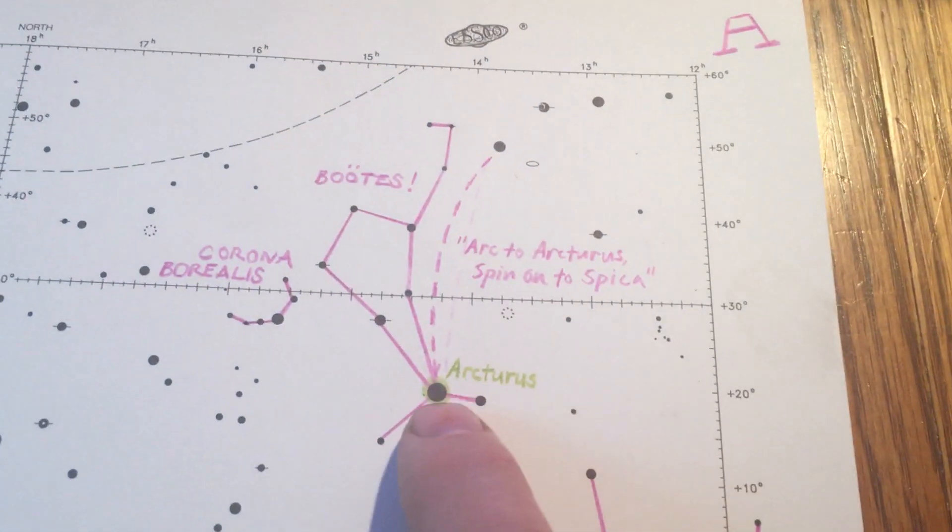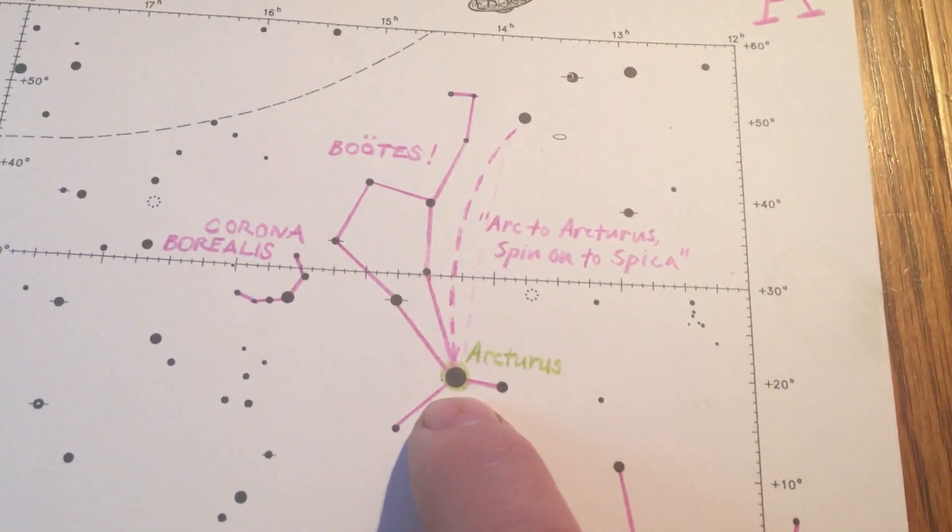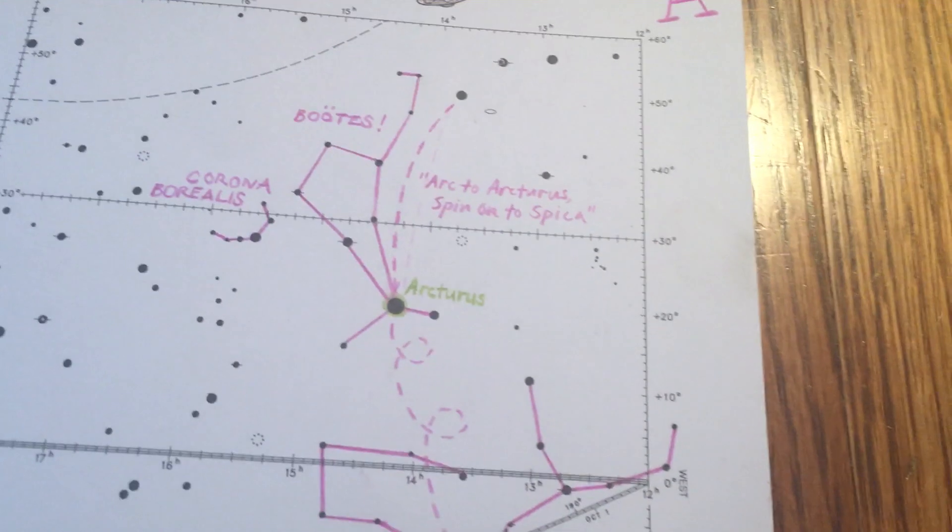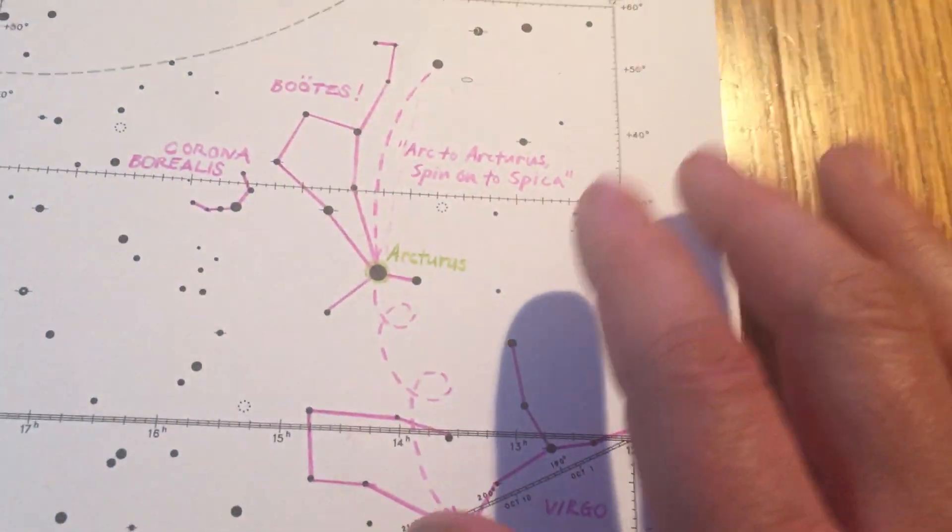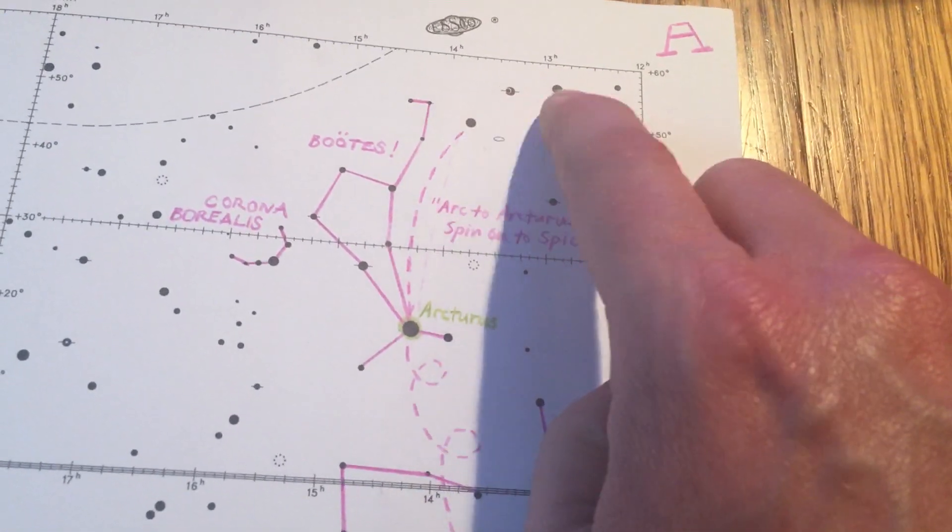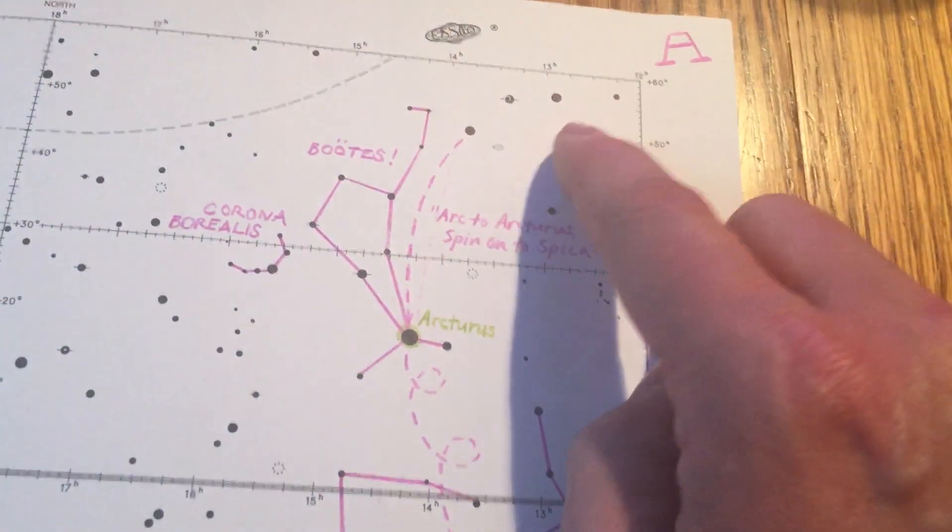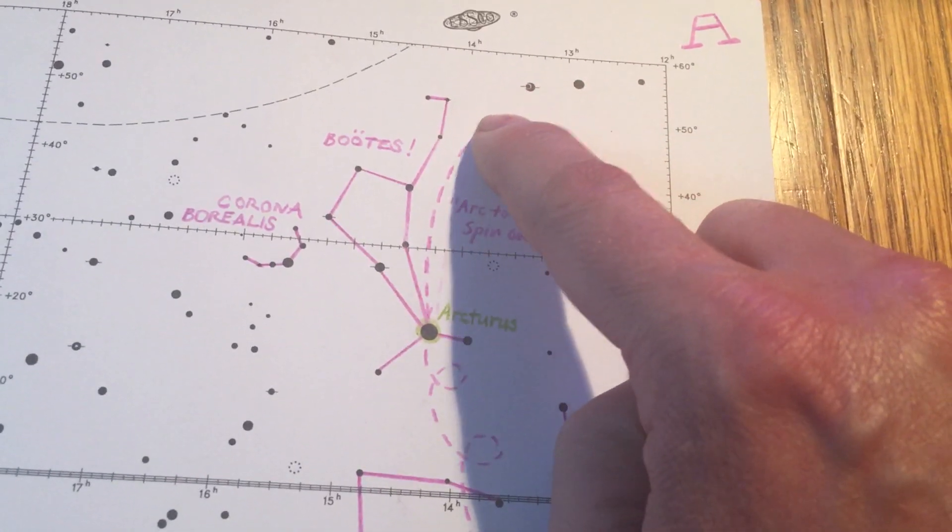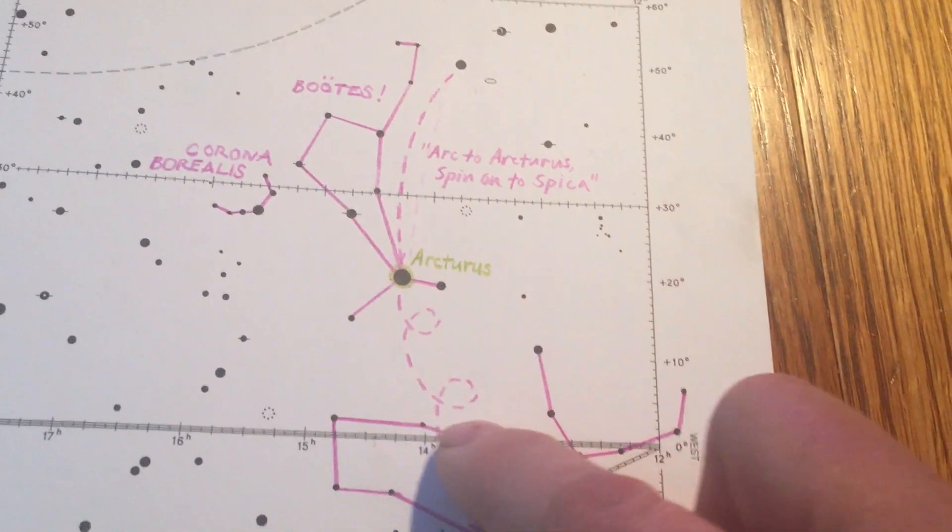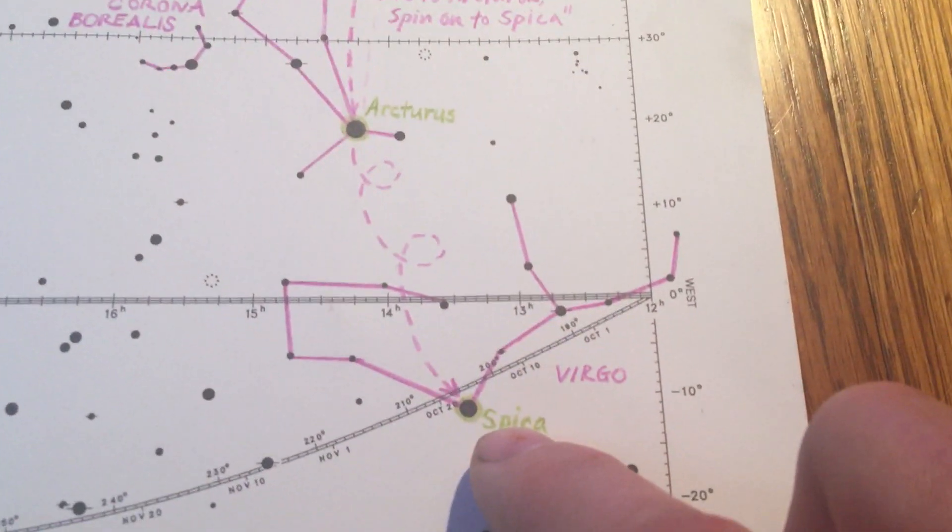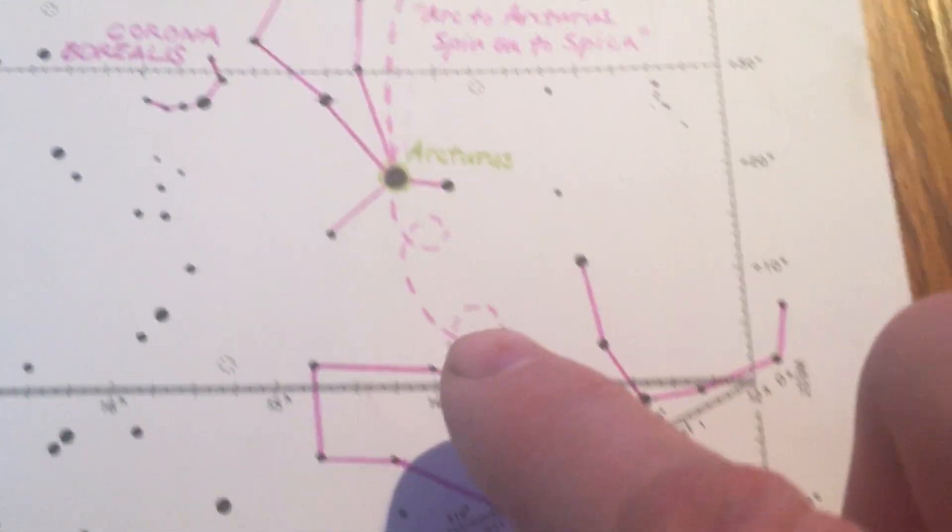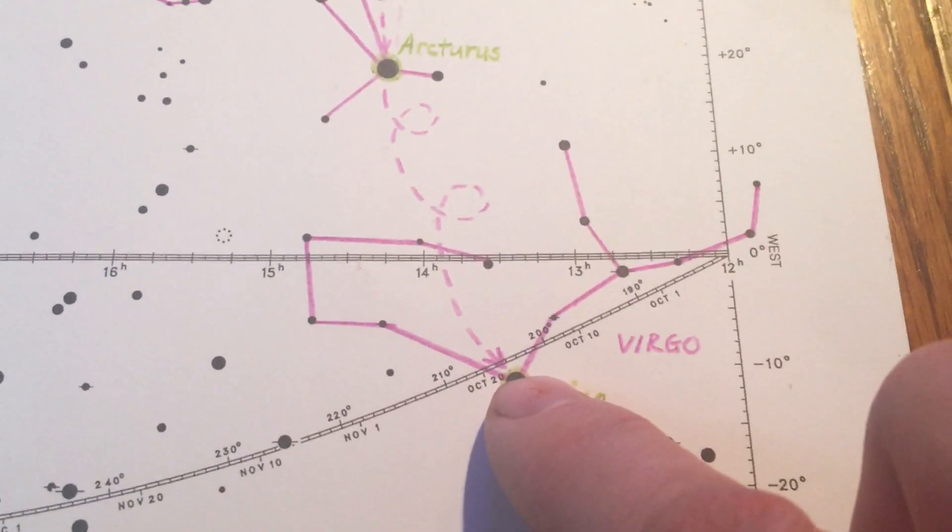Up here in Bootes the Herdsman. This one is Arcturus. And then for the first year ever, even though it doesn't say it on our vocab list, there is a silly but effective saying we can use to get our bearings on the spring sky. So notice, here we had the handle of the Big Dipper. A handle is like an arc. So the silly saying goes, we follow the arc to Arcturus, and then we spin on down, or we drive a spike to Spica. So one more time, we arc to Arcturus, and then we spin on down to Spica. So please add that.